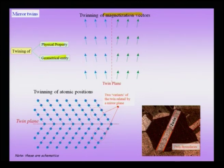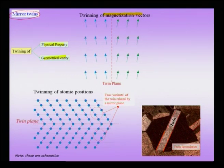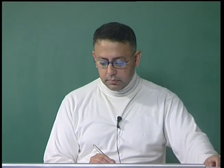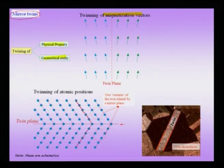At the twin boundary, you can see that the atomic planes are reflected, and since we are talking about reflection, these twins are called mirror twins as the slide title shows. These are mirror twins and on one side of this mirror plane — which I am marking with an arrow — you can see that atomic planes go in this orientation, and on the other side they are reflected by the twin boundary which acts like a mirror plane.